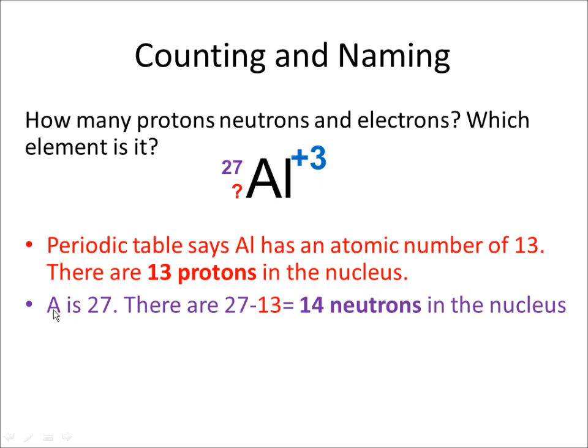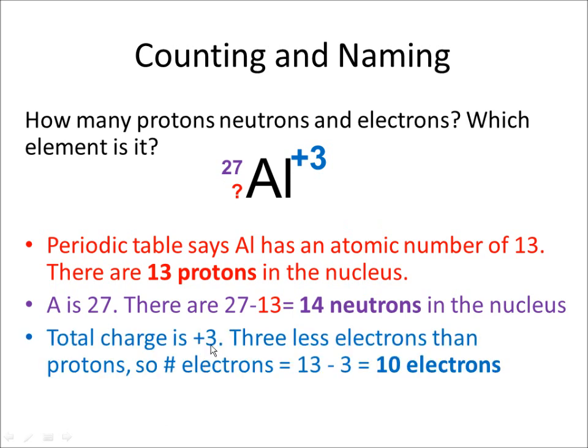Yep. So the atomic mass number, the number of nucleons, is 27. So if there are 13 protons, that means there has to be 14 neutrons to add up to 27, right? Total charge is 3. So that means that there are 3 more protons than there are electrons. So there can only be 10 electrons.